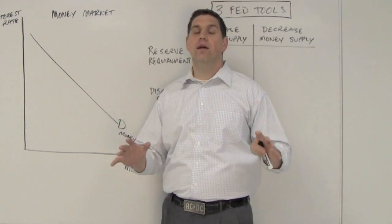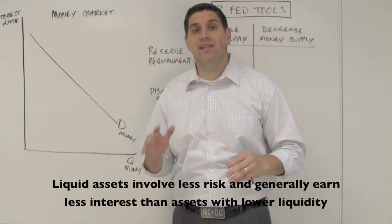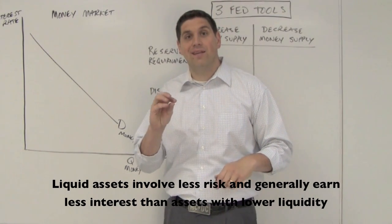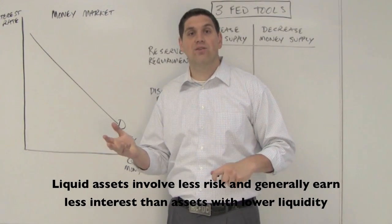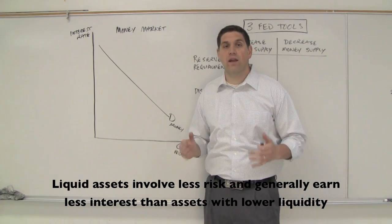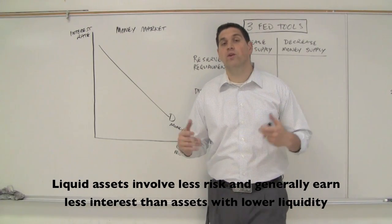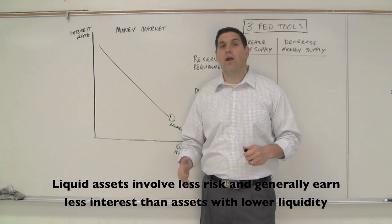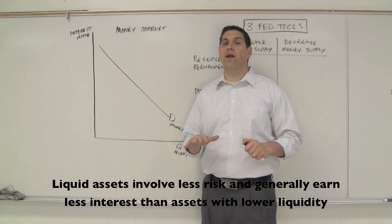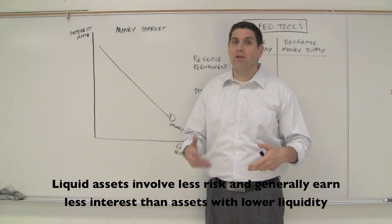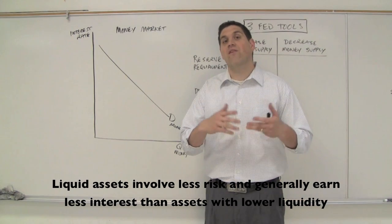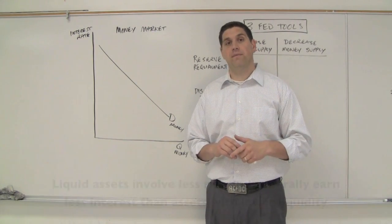Liquidity is the ease with which you can convert an asset into cash. Your checking account is super liquid — all you have to do is walk into the bank and switch out your money. Real estate, on the other hand, is not very liquid. It's an asset, but it takes time to sell it, so it's not a very liquid asset.